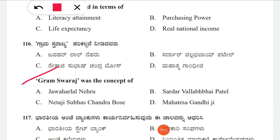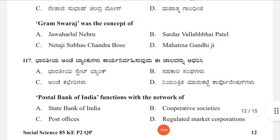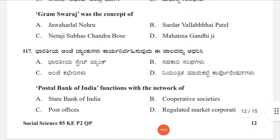Question 116: Grama Swarajya was the concept of — option A: Jawaharlal Nehru, B: Sardar Vallabhbhai Patel, C: Netaji Subhash Chandra Bose, D: Mahatma Gandhi. The correct answer is D, Mahatma Gandhi.